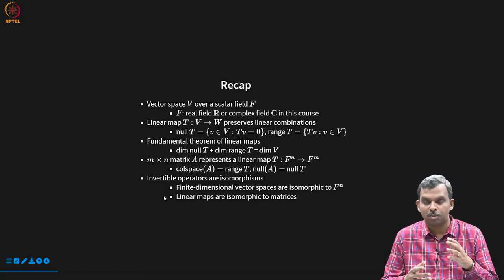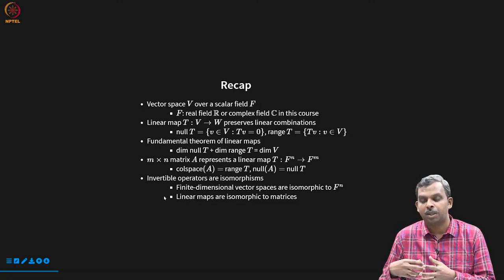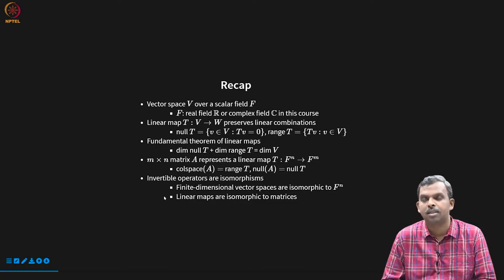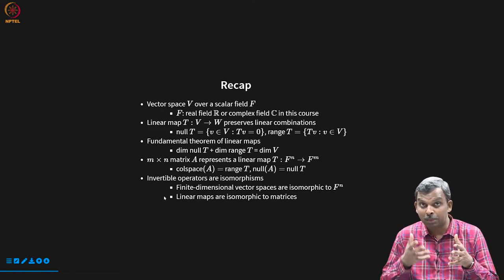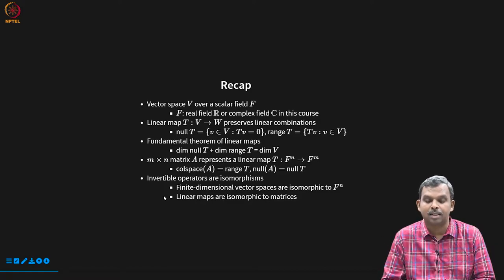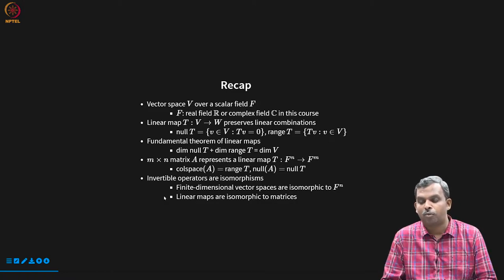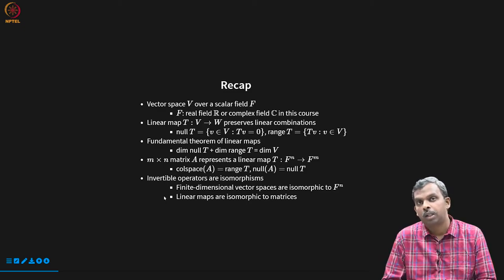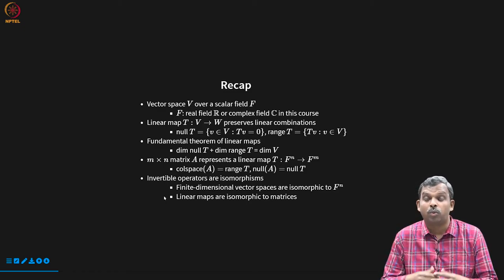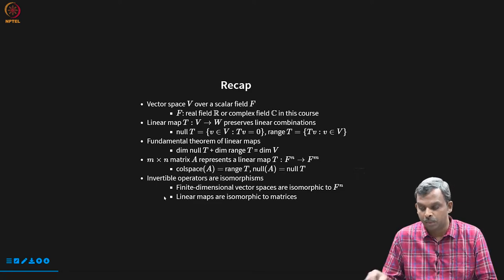In particular, there is this notion of column space, which is the same as the range of the linear map, and this notion of null space of a matrix, which is also the same as the null space of the linear map. We also saw invertible operators and we saw that they define isomorphisms. And then we saw that any finite dimensional vector space is like F^n, and linear maps are in fact isomorphic to matrices. Now we will put quite a few of these results to use in trying to solve linear equations.